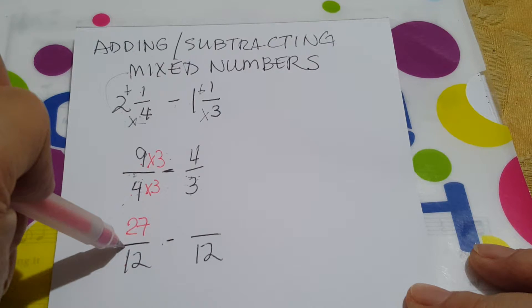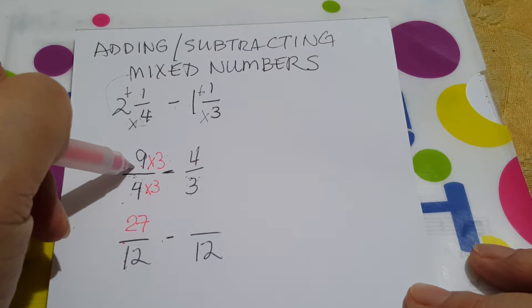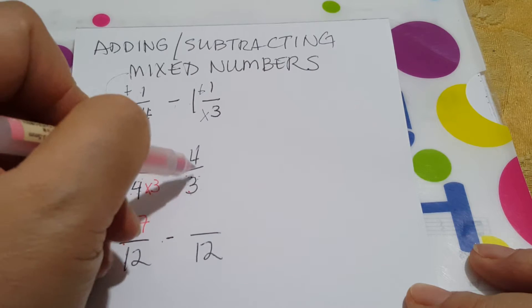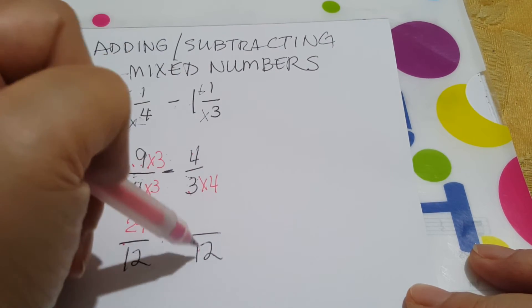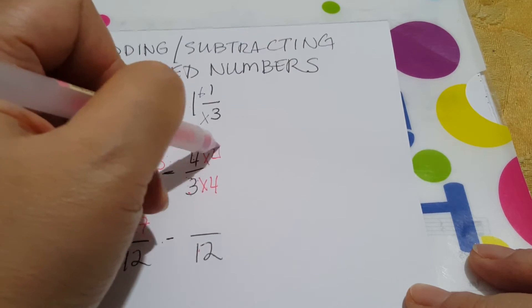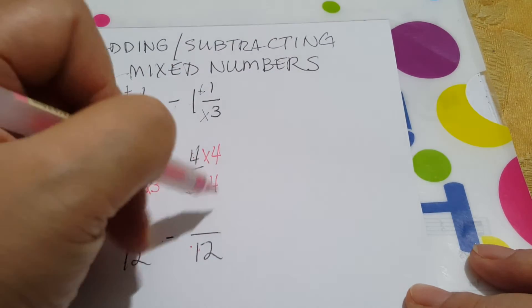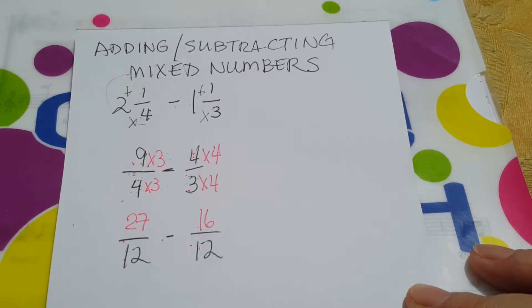Because when you put this into lowest terms, it would go back to this one. Now what did you multiply by 3 to get 12? We multiplied it by 4. So do the same with the numerator. So the new numerator here would be 4 times 4, 16.